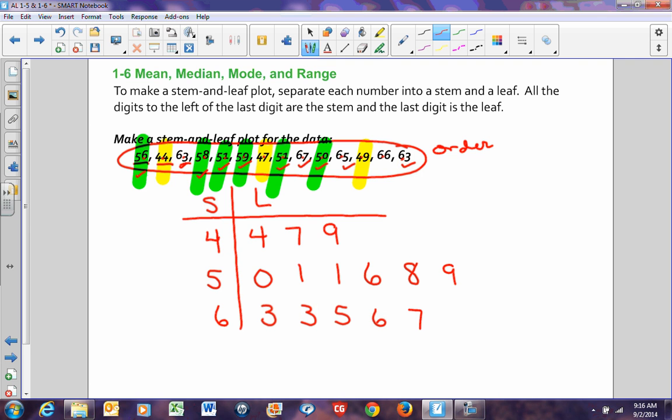The last thing you need to do on a stem-and-leaf plot is you have to make a key. People need to know what these numbers here represent. They have no idea how to read this. This should be read as 44, 47, 49. To tell someone that, you put a little key down here, and I can say 4 slash 4 equals 44. So now people know that that's how you read your stem-and-leaf plot. Once you're done, you can also find the mean, median, mode, and range for this. A stem-and-leaf plot is in order when you're done, so that makes it nice and tidy.